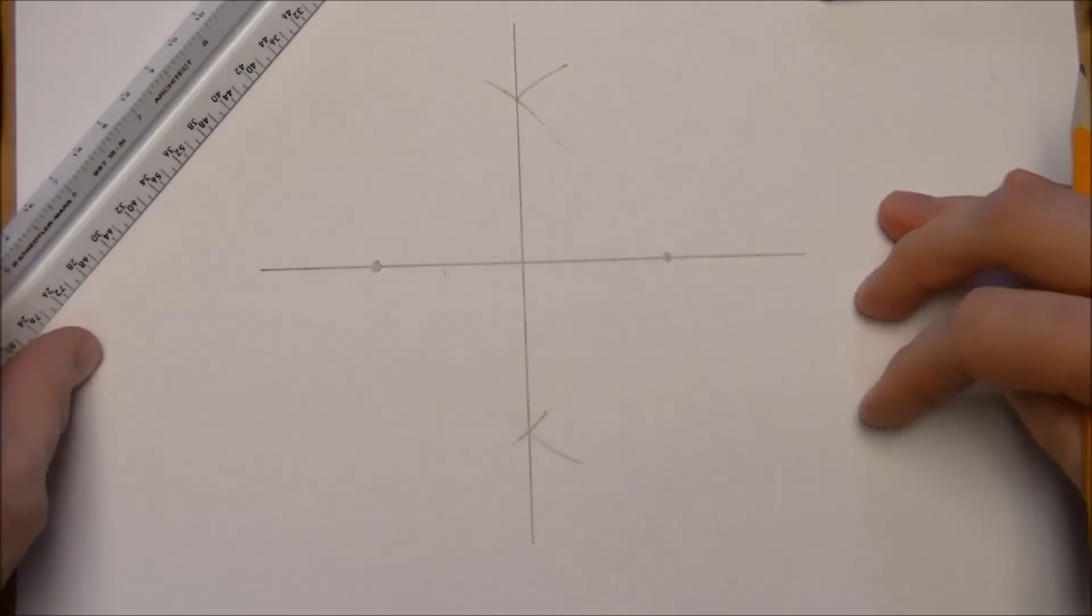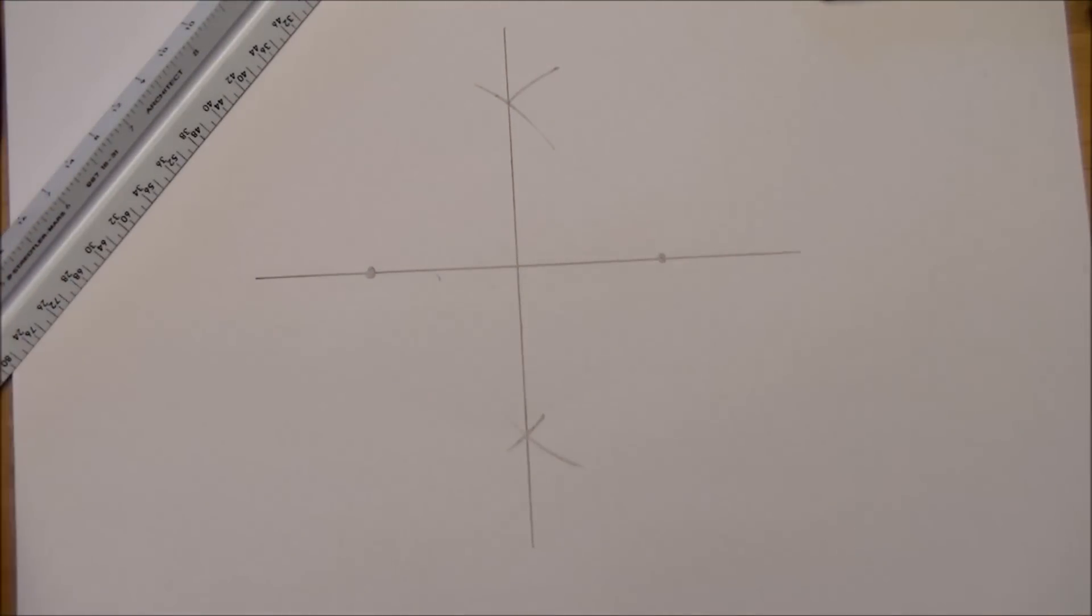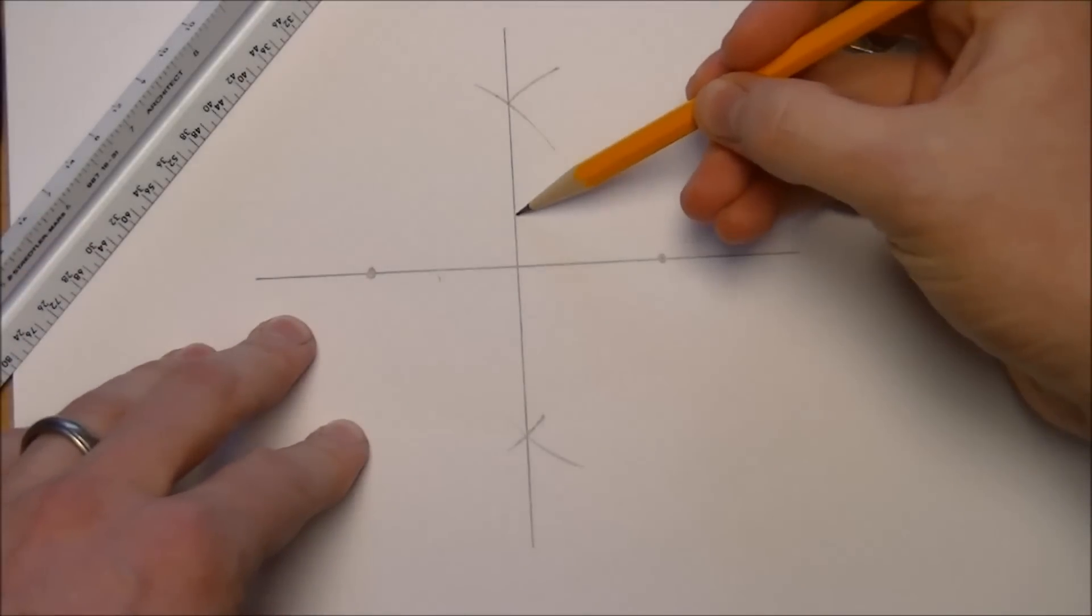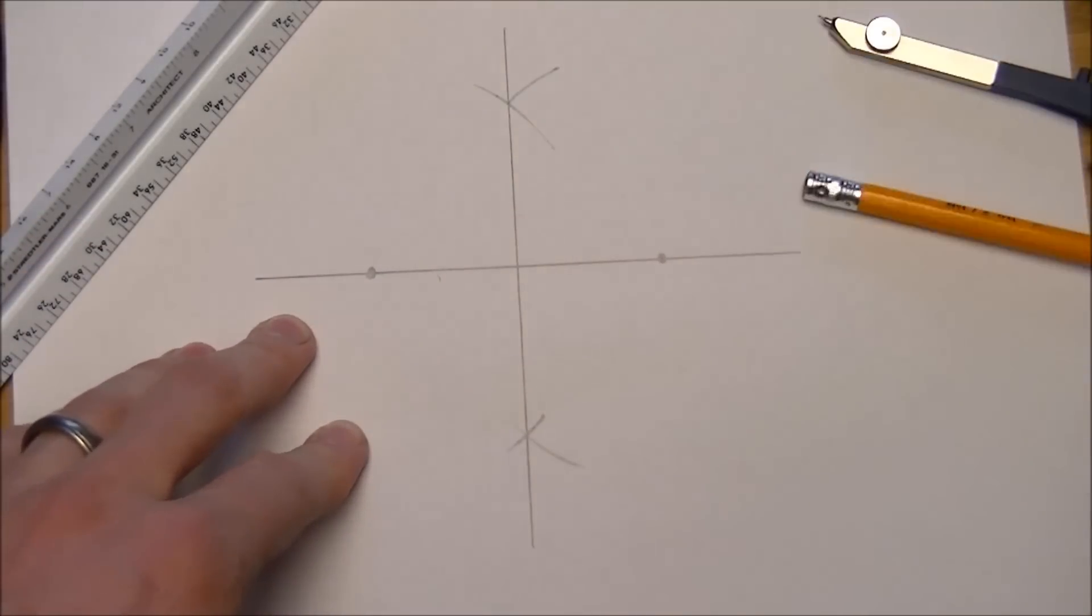That creates a perpendicular set of lines. Now what we're going to do, in addition to that, is bisect this angle from here to here, and this angle as well.